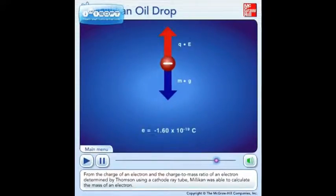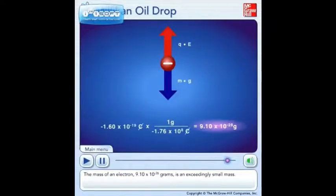From the charge of an electron and the charge-to-mass ratio of an electron determined by Thomson using a cathode ray tube, Millikan was able to calculate the mass of an electron. The mass of an electron, 9.10 times 10 to the negative 28th grams, is an exceedingly small mass.